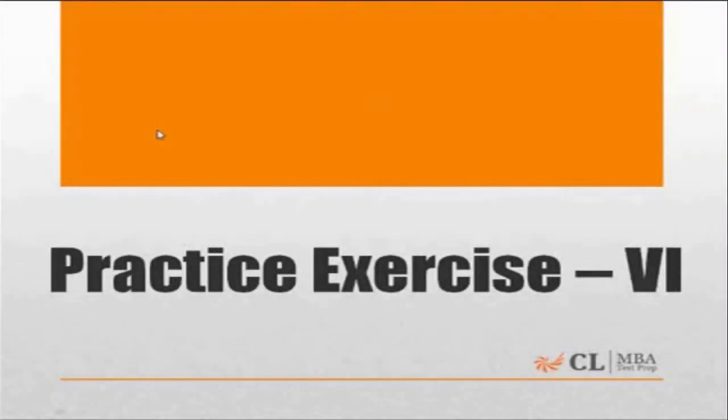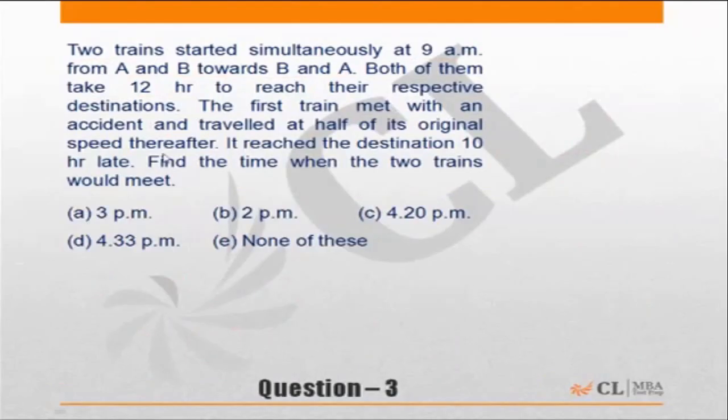Practice exercise 6 of time, speed, and distance. Question 3. Two trains have started simultaneously at 9 a.m. from A and B towards B and A. Both of them take 12 hours to leave their respective destination.